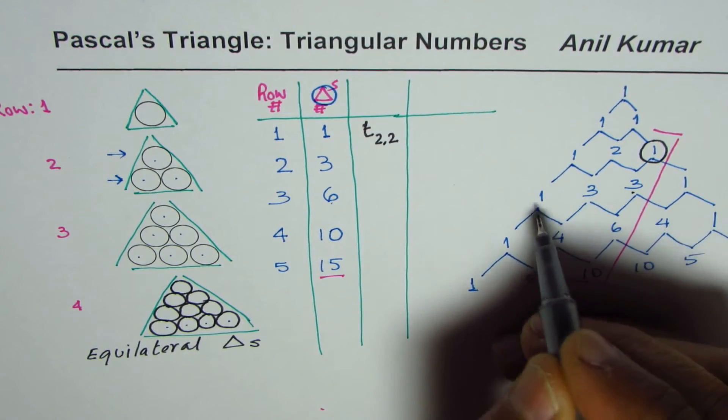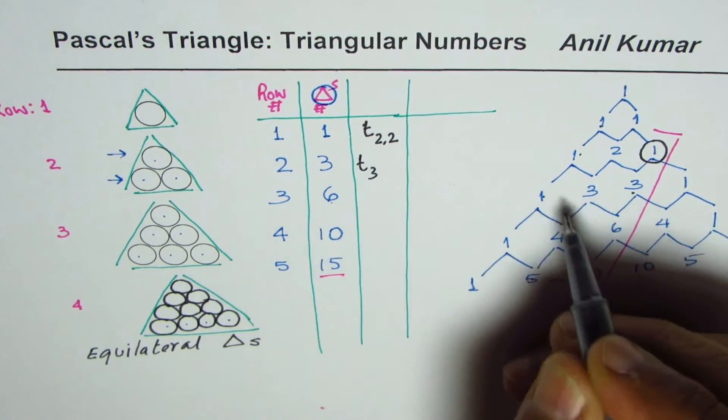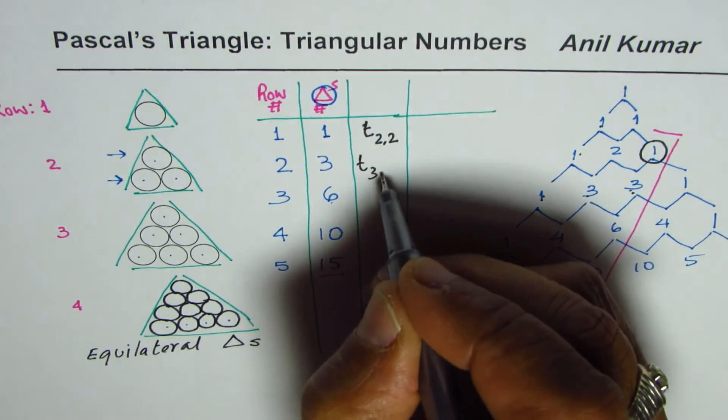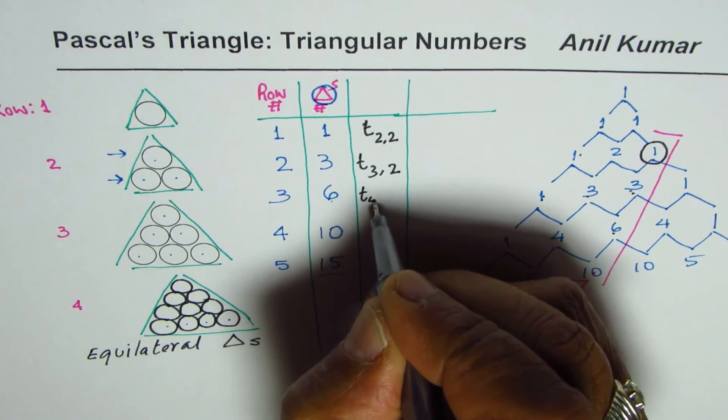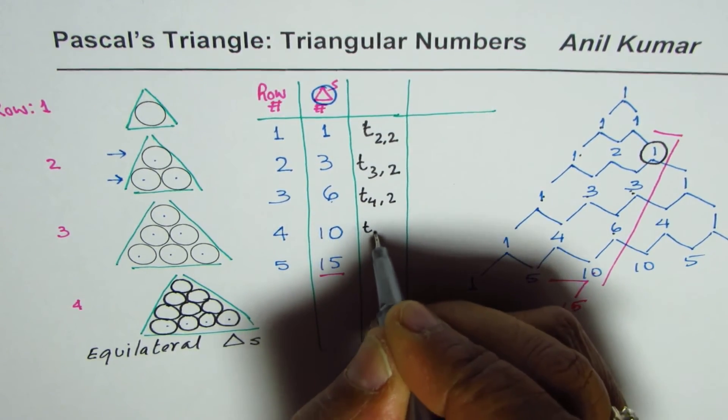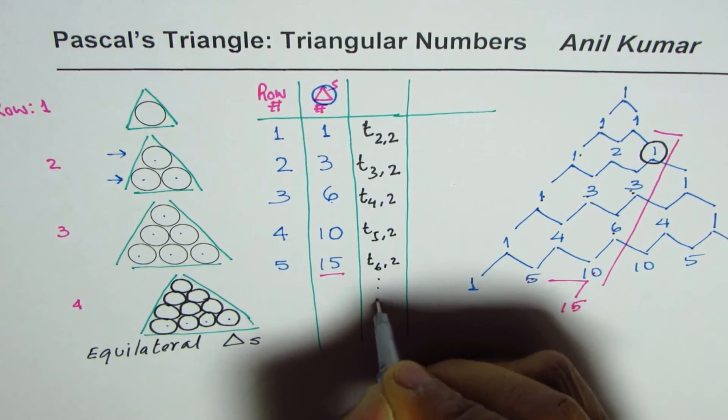This position is row number three for us. Zero, one, two, three. So it is T_3,2. Similarly, the other positions are T_4,2, T_5,2, T_6,2, and so on.